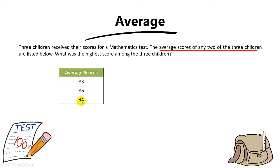Give me a guess: how come there are three numbers here and not two numbers? It says average scores of any two. Why don't you see just two numbers? Why do we see three numbers instead?